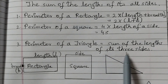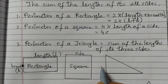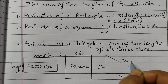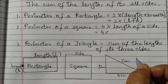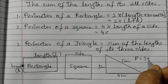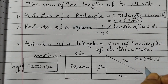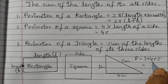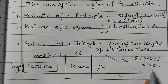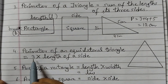The perimeter of a triangle is equal to the sum of the lengths of its 3 sides. For example, if the sides are 3 cm, 4 cm, and 5 cm, the perimeter equals 3 + 4 + 5 = 12 centimeters.